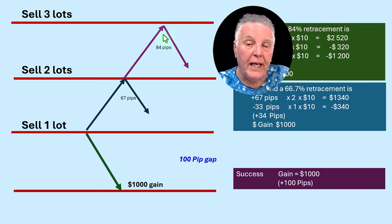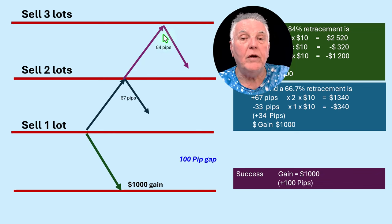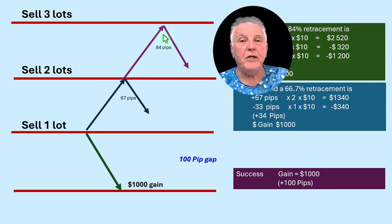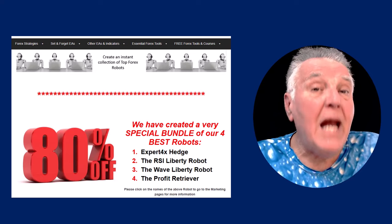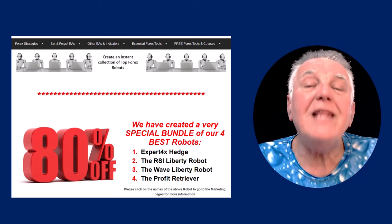So that is the profit retrieval process. Now we have a number of robots that use the profit retrieval process, and at the moment we have an 80 percent off bundle of four of the best robots that use the profit retrieval process.